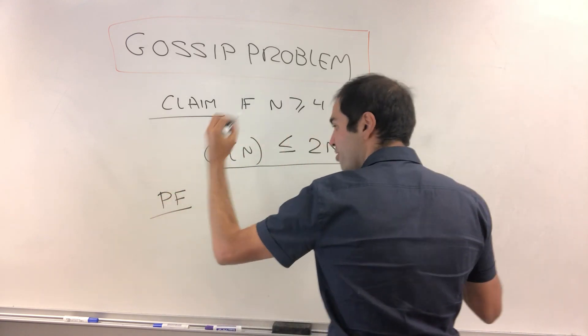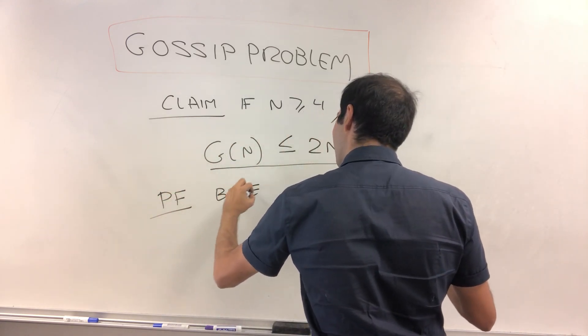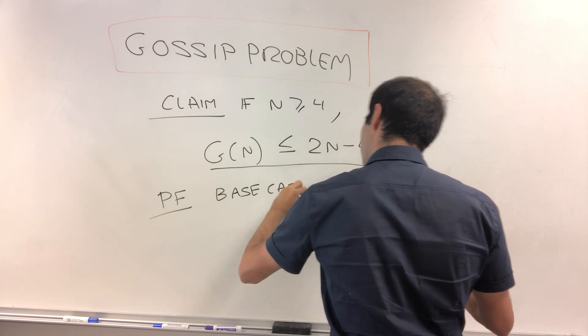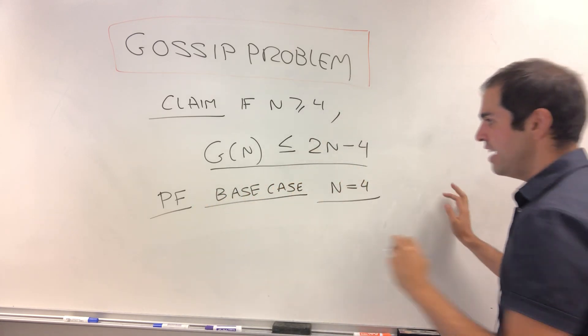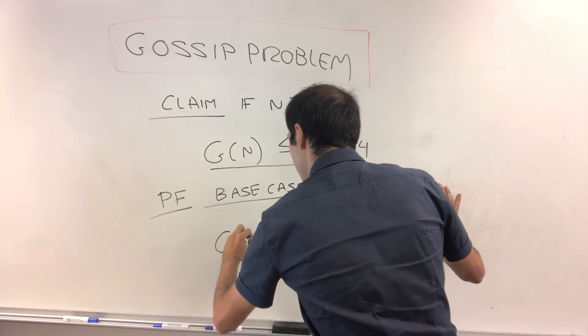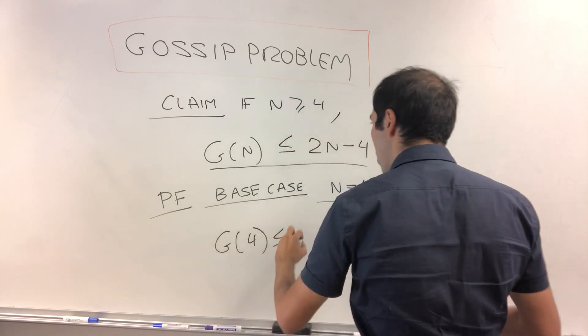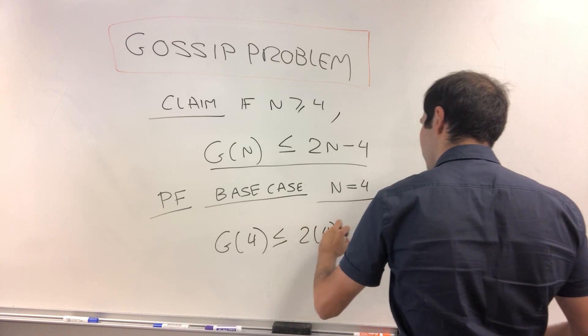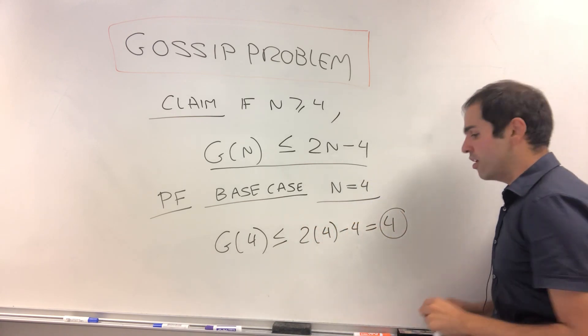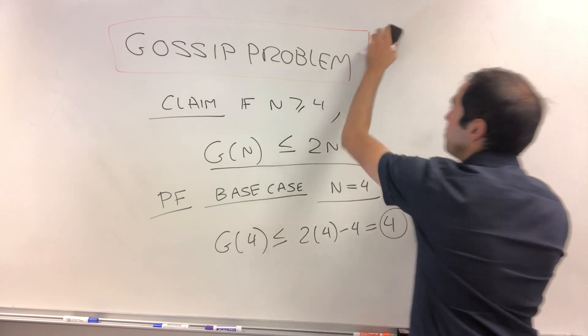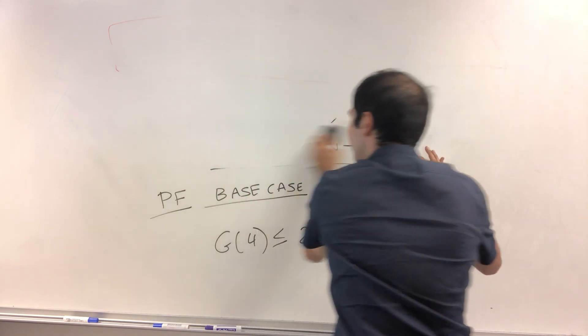First of all, it's all about the base, so base case. Let's do n equals four. And let's show that for four people, it takes at most two times four minus four, it takes at most four calls for everyone to know each other's gossip. Alright. Let's see how we can do it.